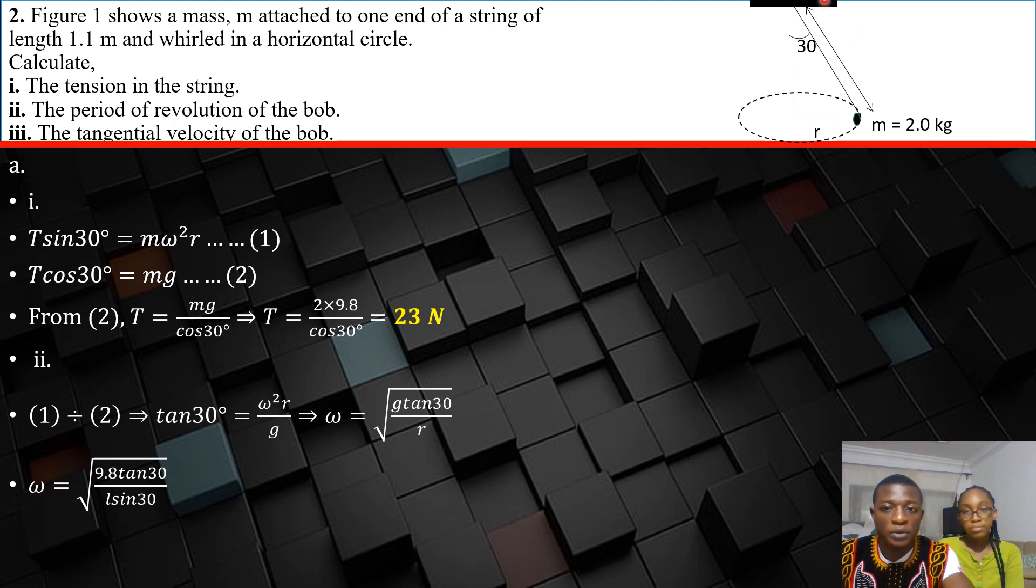What's our radius? You have to resolve the length of this string. The length has components L cos 30 here and L sin 30 here. That L sin 30 equals the radius of the path described by the particle. So right here you see me replacing the r with L sin 30.